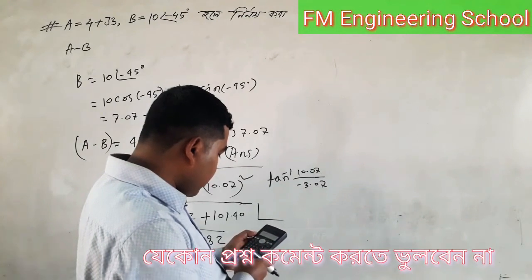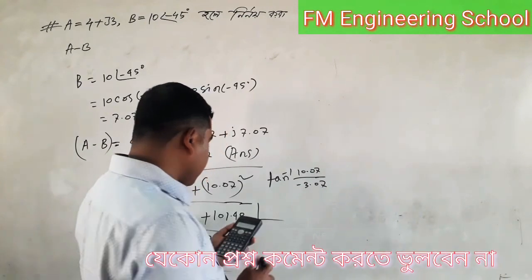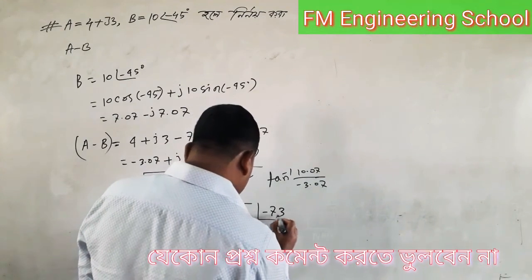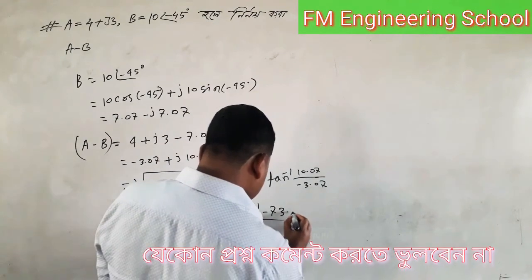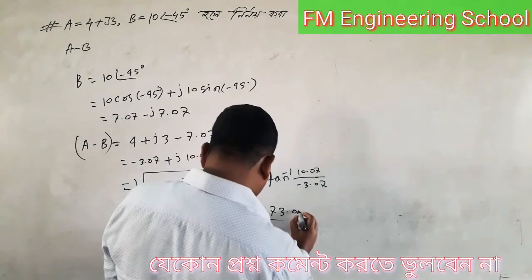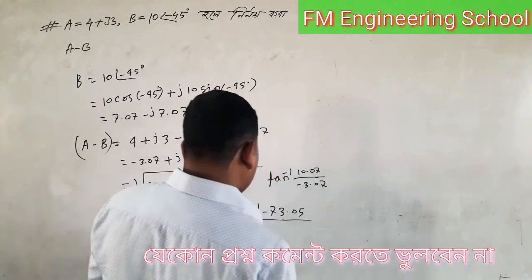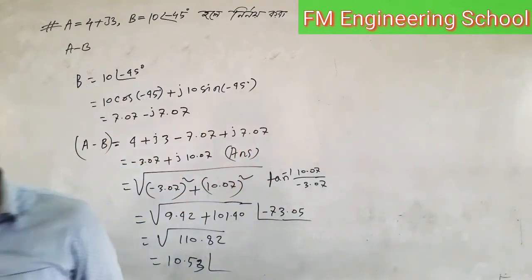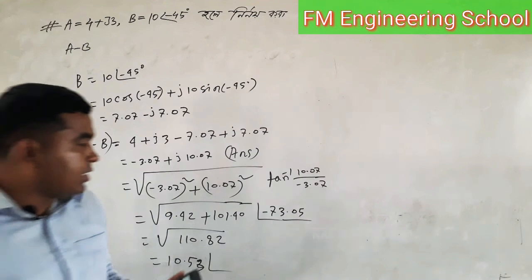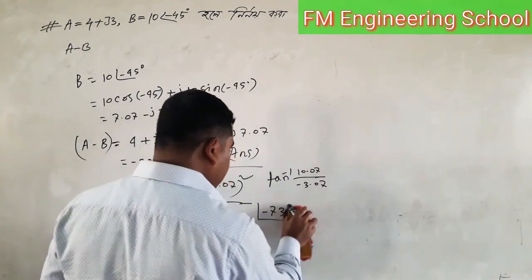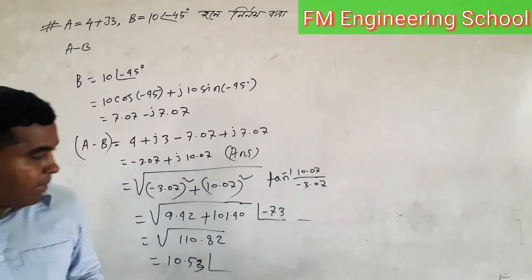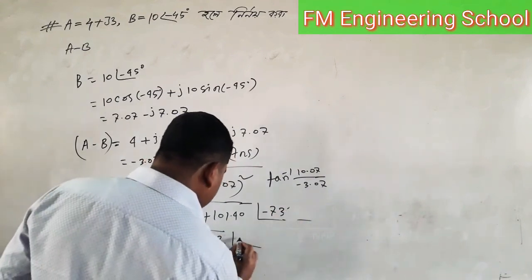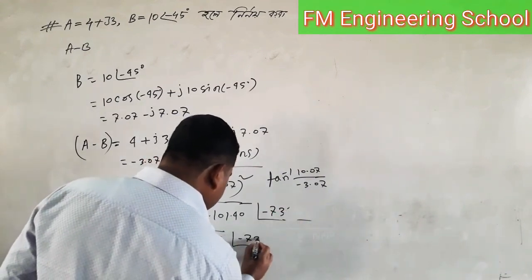We take tan inverse of this value. The result is minus 73, that is minus 73.04 or minus 73.05 degrees. So the angle is minus 73 degrees.